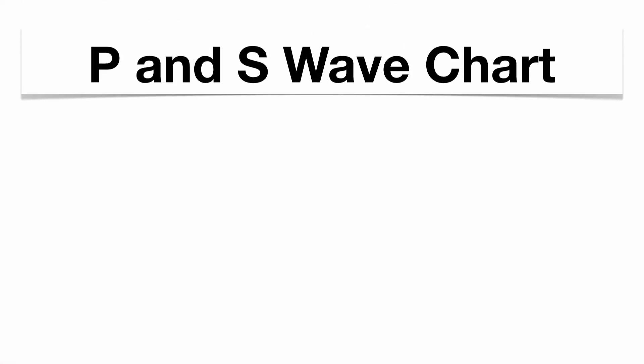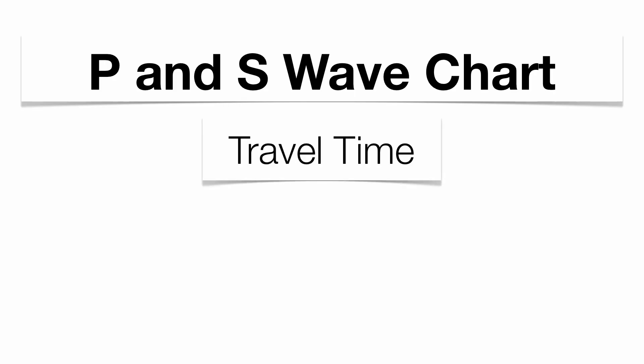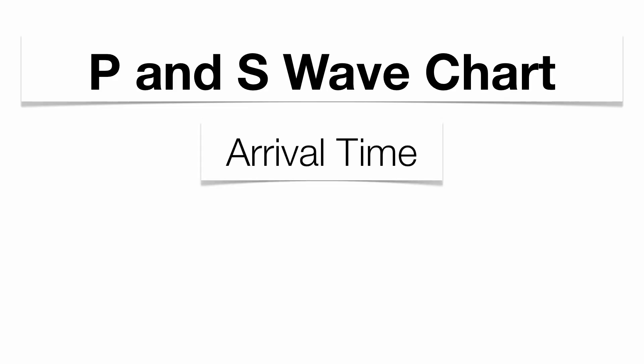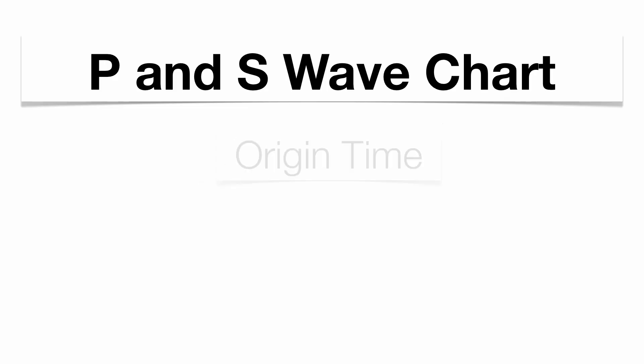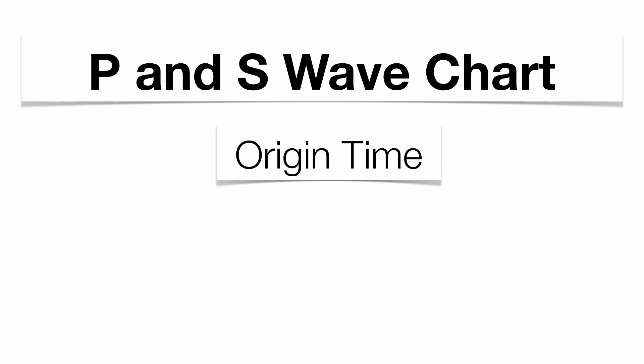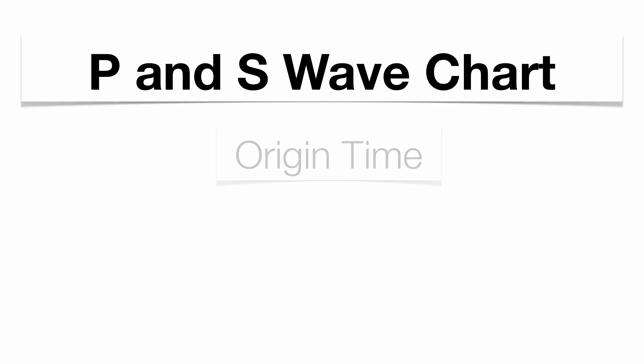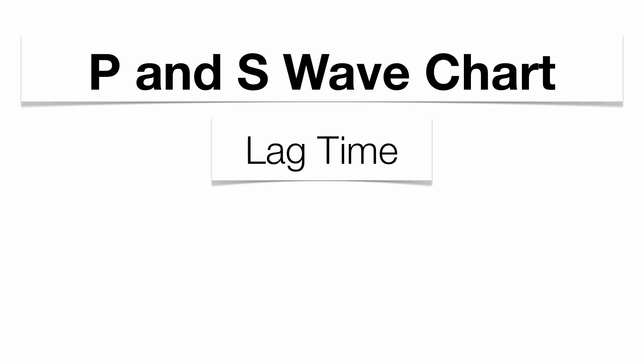Before we get started, there are some terms that you need to know. You have travel time, which is the amount of time it takes a P-Wave or S-Wave to travel a specific distance from the epicenter. You have your arrival time, which is the time that the P-Wave or S-Wave gets to you or your seismic station. Your origin time is the time the earthquake starts.